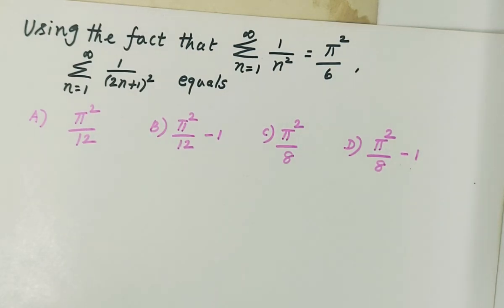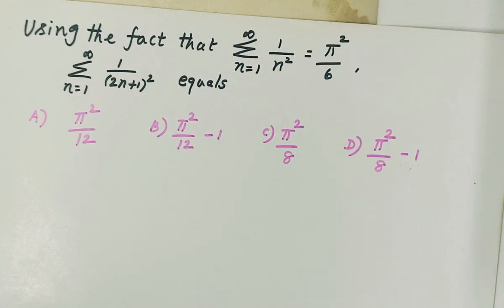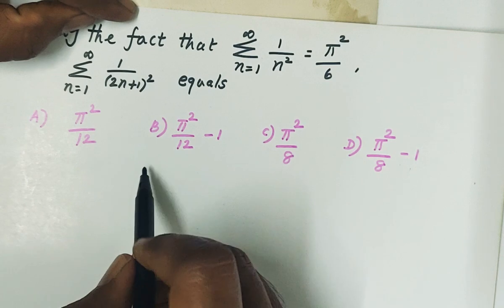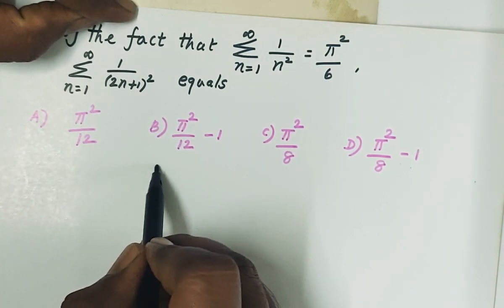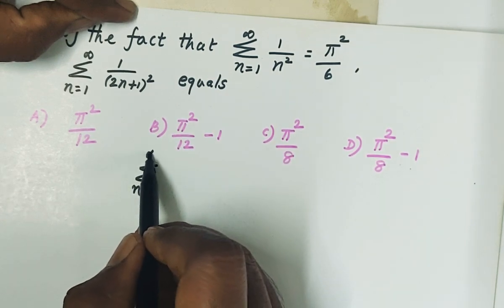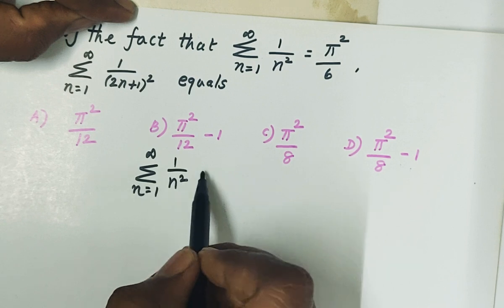Welcome to Kamal Online Max. Now we have an objective equation. Using the fact that summation n runs from 1 to infinity, 1 by n square equals pi square by 6, find summation n equal to 1 to infinity, 1 by 2n plus 1 whole square. So given summation 1 by n square equal to pi square by 6, we need to find the value of summation 1 by 2n plus 1 whole square.